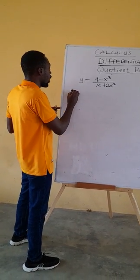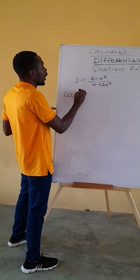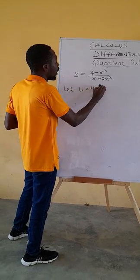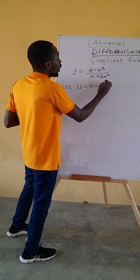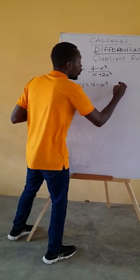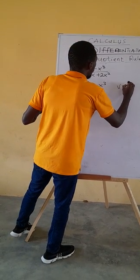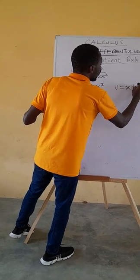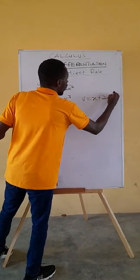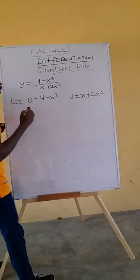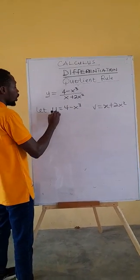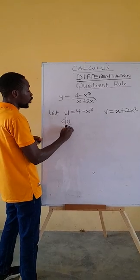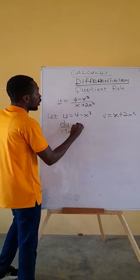Using the same approach, we let u be equal to 4 minus x cubed, and v to be equal to x plus 2x squared. Then we differentiate.